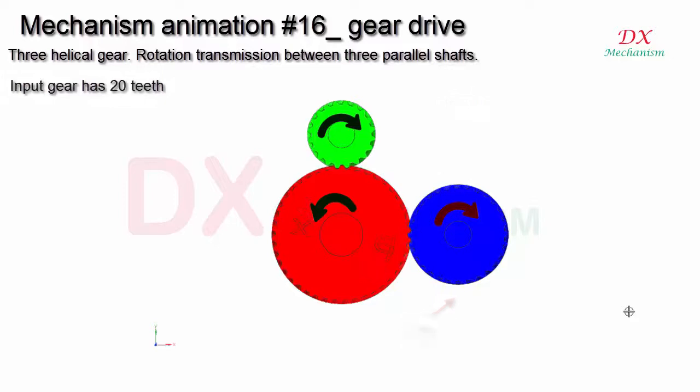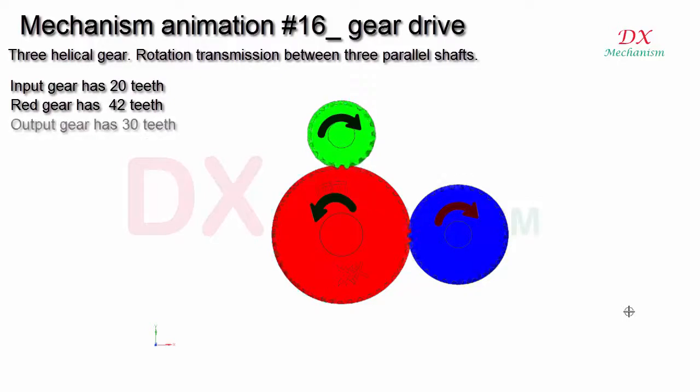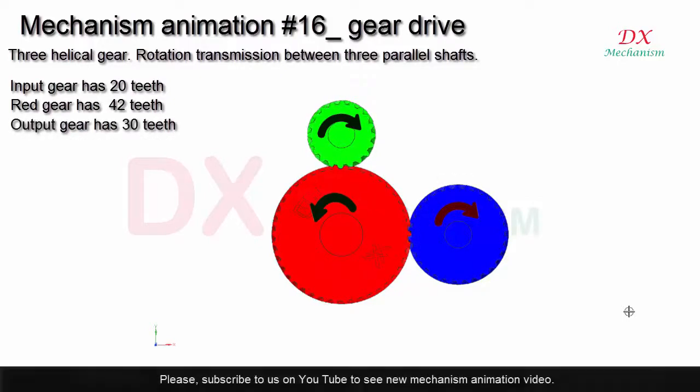The input gear has 20 teeth. The red gear has 42 teeth. The output gear has 30 teeth.